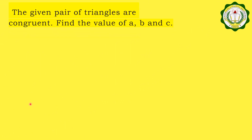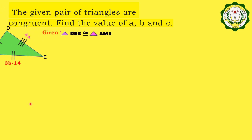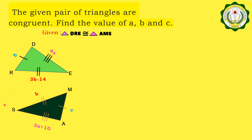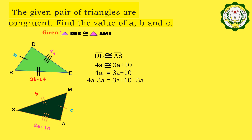For practice exercise number 2, we are given that the pair of triangles DRE and AMS are congruent. What we will do is solve for the values of A, B, and C. Let us solve first for the value of A. We have segment DE congruent to segment AS. DE is equal to 4A and AS is equal to 3A plus 10. By substitution, 4A is equal to 3A plus 10. Adding negative 3A to both sides, we get A is equal to 10.